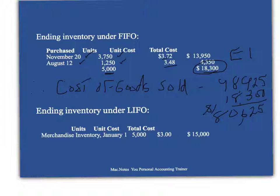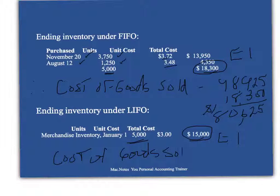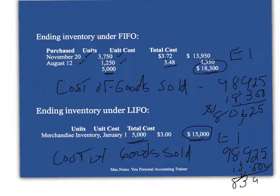Under LIFO — last in, first out — the 5,000 remaining units were the 5,000 we had at the beginning of the period. Therefore, the ending inventory is $15,000, and the cost of goods sold is $98,925 minus $15,000, which equals $83,925.